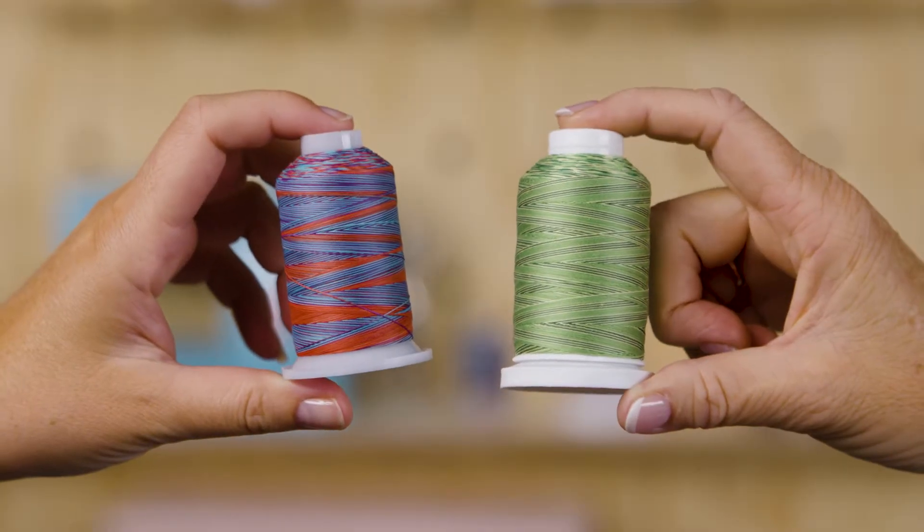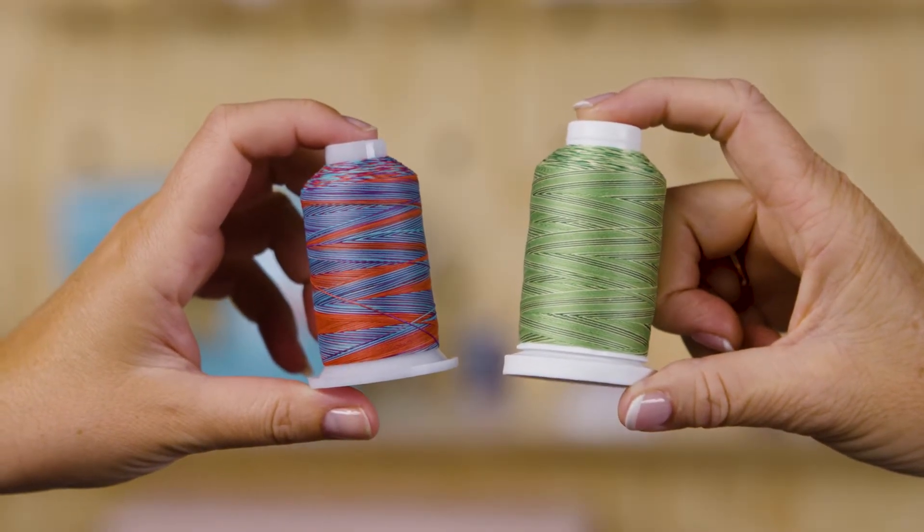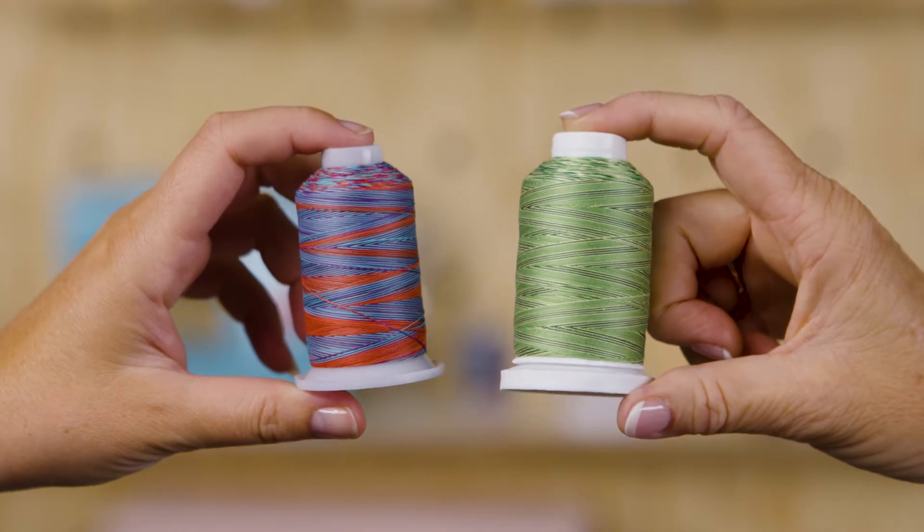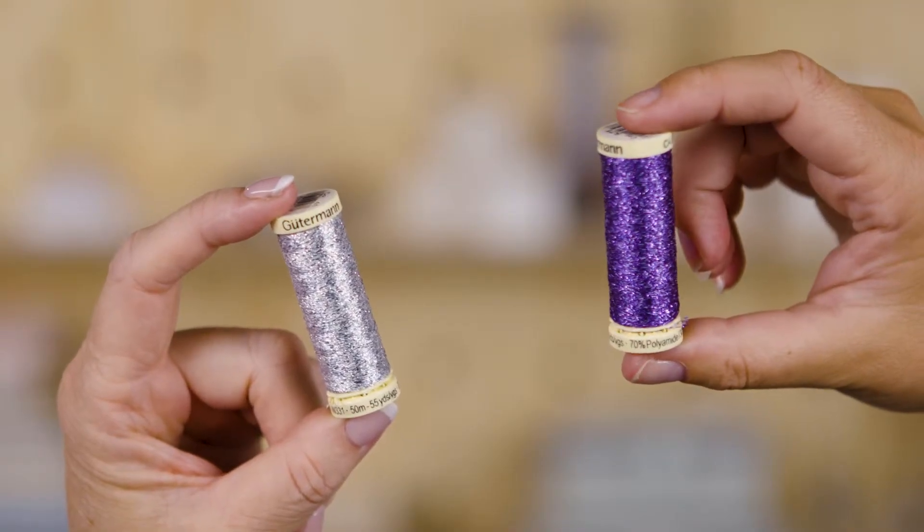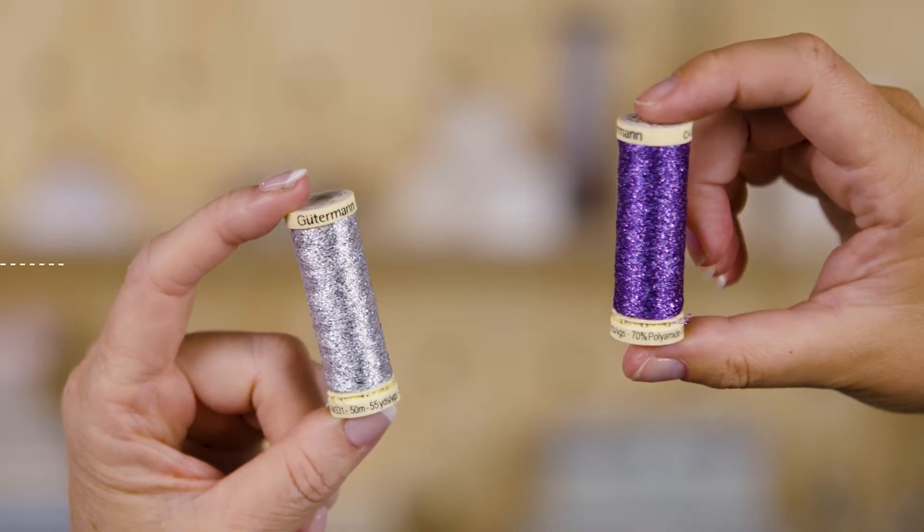Look for variegated thread, which is dyed in different complementary colors along the strand, for an interesting finish. Use a contrasting color if you want your stitching to stand out or you're using a decorative stitch type. Metallic thread is suitable for fabrics with high shine or luster.